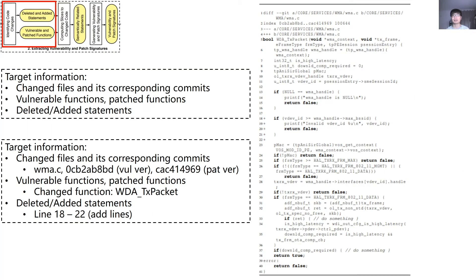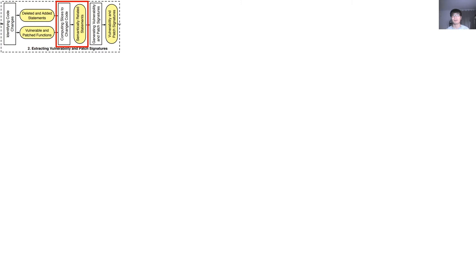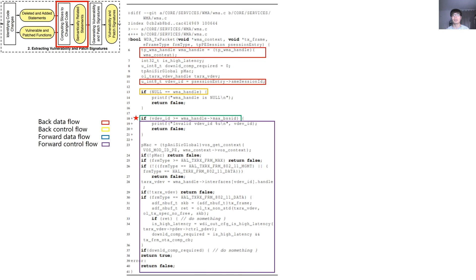There are three sub-modules in the Extracting Vulnerability and Patch Signature module: identifying code changes, computing slices to changed code, and generating vulnerability and patch signatures. For identifying code changes, we first identify changed files, changed functions, and changed statements. Neither the changed statements alone nor all the statements in changed functions can precisely capture how a vulnerability is caused. Intuitively, slicing techniques can be used to include relevant statements and exclude irrelevant ones. For example, we set the edited statement at line 18 as the slicing criterion. The result of backward slicing includes lines 6, 11, and 13. The result of forward slicing includes statements at lines 19 to 40.